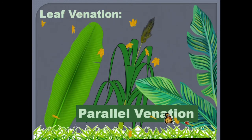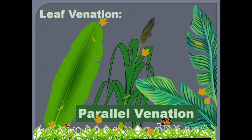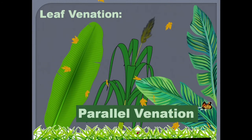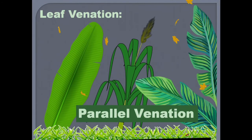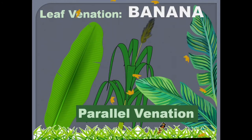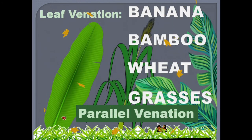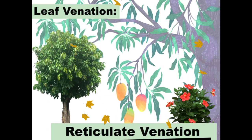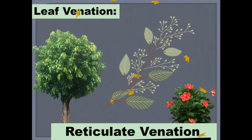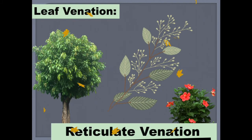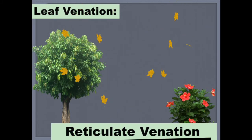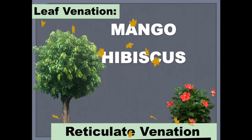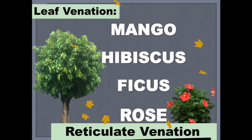When talking about veins: if the veins are arranged parallel to one another all through the lamina, they are called parallel venation. It occurs in monocot plants like banana, bamboo, wheat, grasses, etc. When the veins show a network or web-like arrangement all over the leaf blade or lamina, it is called reticulate venation, where the orientation of veins produces a network-like structure. It occurs in dicot plants like mango, hibiscus, ficus, etc.